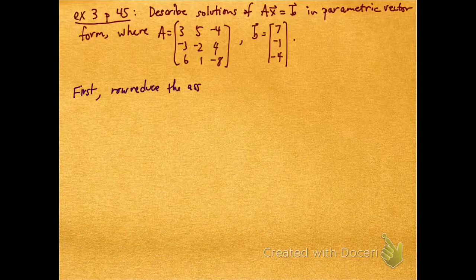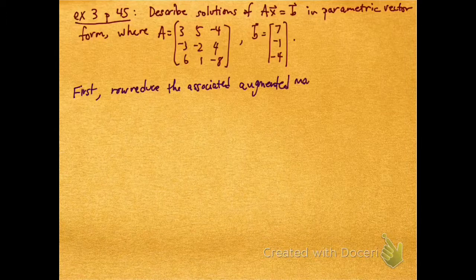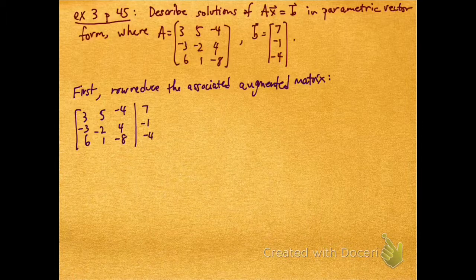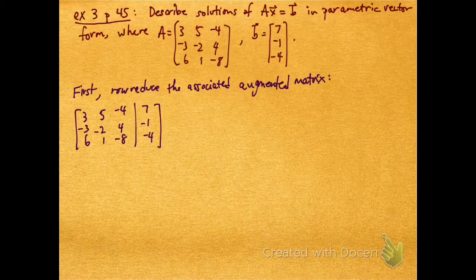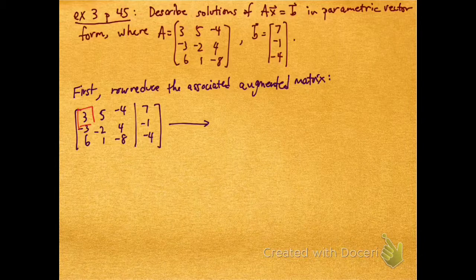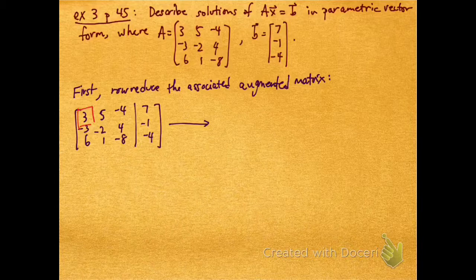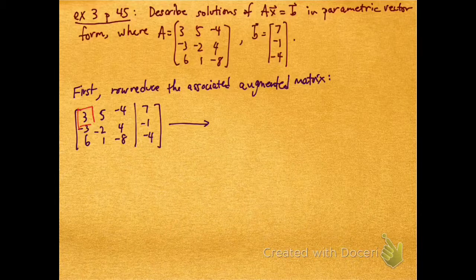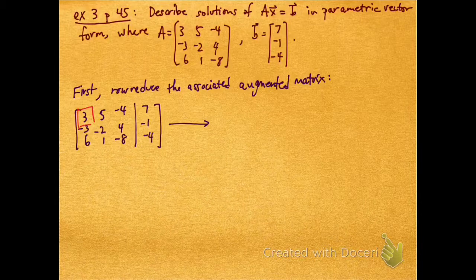The first step is we're going to row reduce the associated augmented matrix. I can get that augmented matrix by jamming together the coefficient matrix A and this column vector B. So the first step of row reduction or Gaussian elimination, I'm going to take that pivot - I put a red box around it here, this 3.